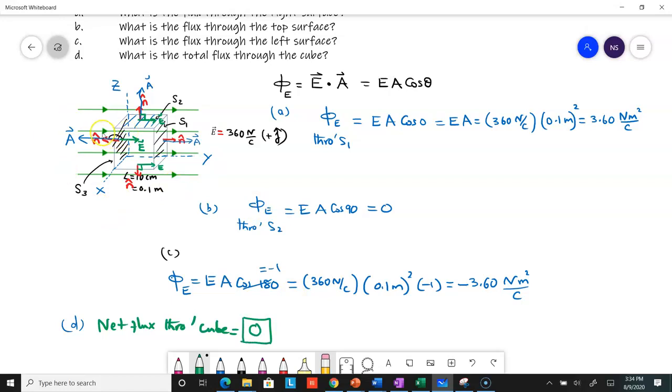Flux through all surfaces added together gives you zero. This is another way to convince ourselves: since the electric field is constant, every field line entering the surface also leaves the surface, so the net flux is zero.